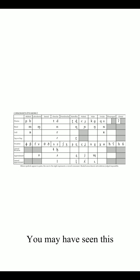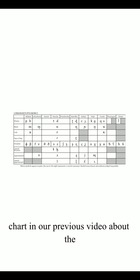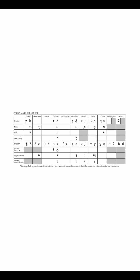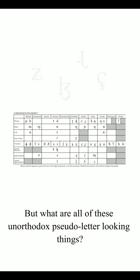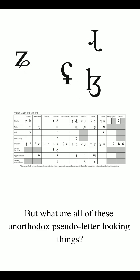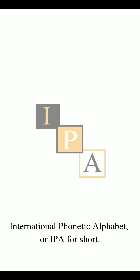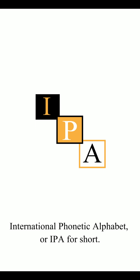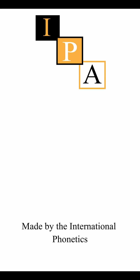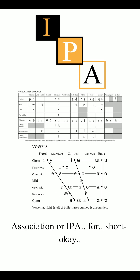What is this chart? You may have seen it in our previous video about the glottal plosive, but what are all of these unorthodox pseudo-letter looking things? Well, this chart represents the International Phonetic Alphabet, or IPA for short, made by the International Phonetics Association — or IPA for sure. Okay, that has to be intentional.